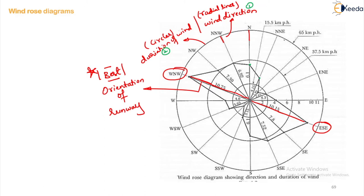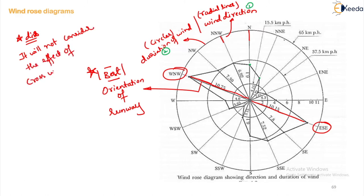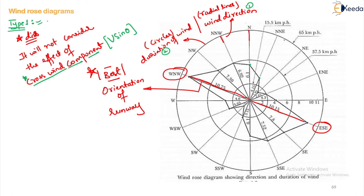This type of wind rose will not consider the effect of the crosswind component — that is the major disadvantage. As we have already seen, the crosswind component is also one of the important factors in deciding the runway orientation. Because this is not taken into consideration, the Type 1 method of drawing wind rose diagrams is not the best suited.